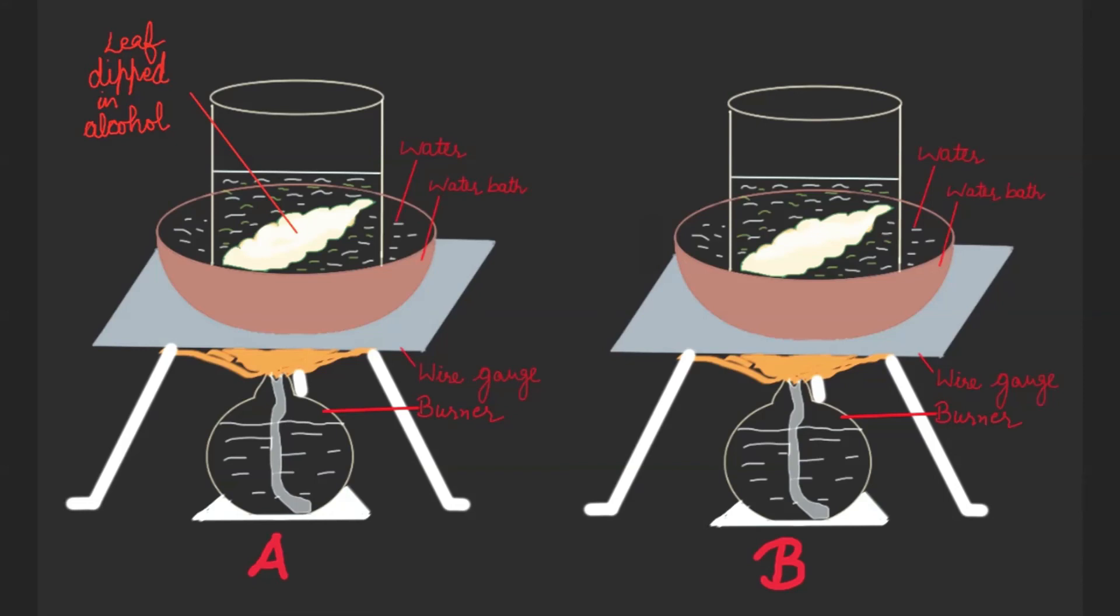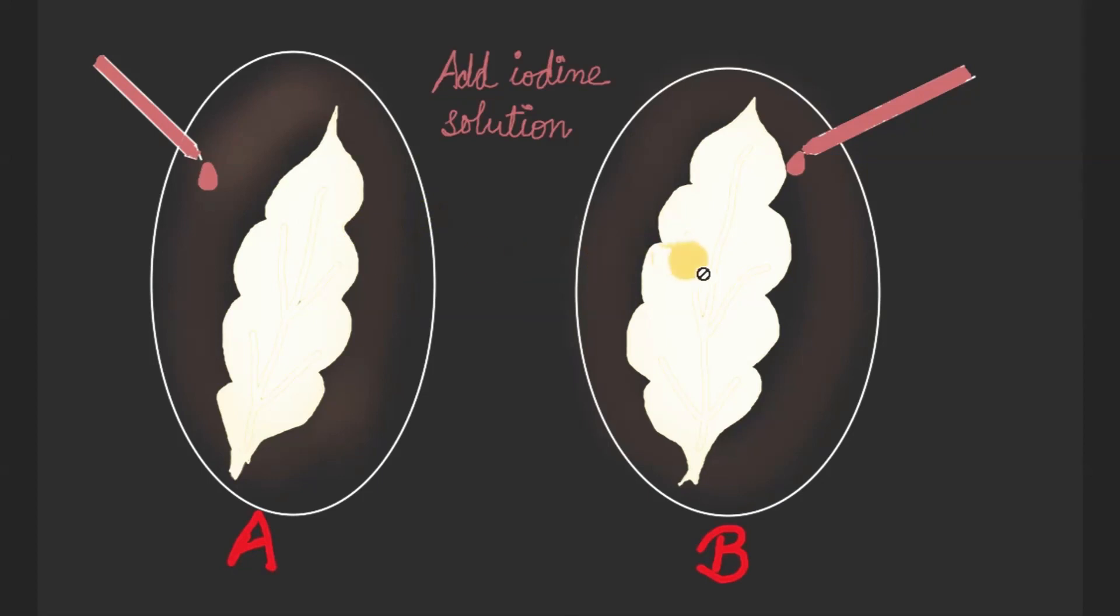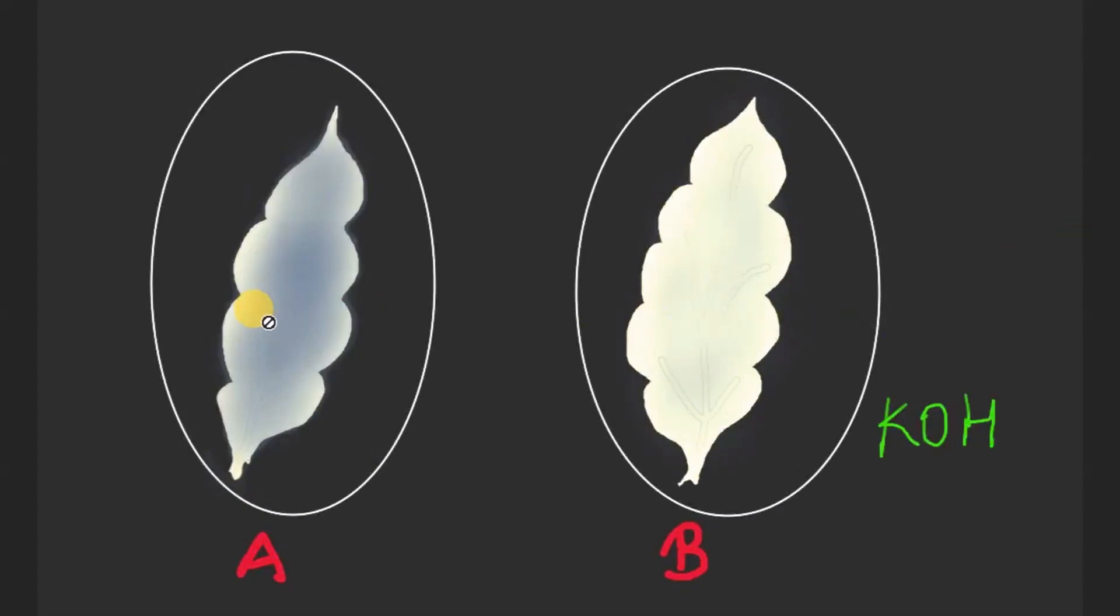we will take these leaves out into the petri plates, and we will add iodine solutions over the leaves. And then we will observe the colors. Iodine solution is used to test the presence of starch.